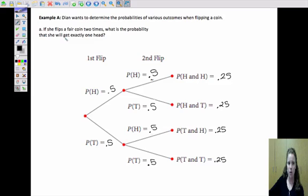So the question asks, what's the probability that she'll get exactly one head? Well, in this circumstance and in this circumstance, we get exactly one head. So 0.25 plus 0.25 gives us, there's a 50% chance or a 0.5 chance that she will get exactly one head.